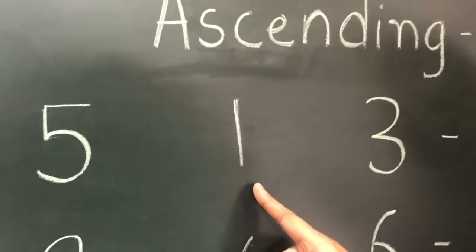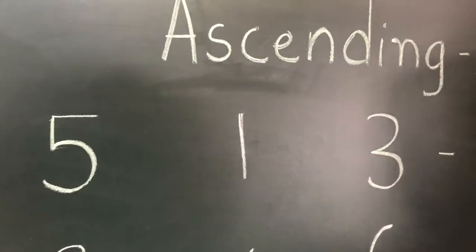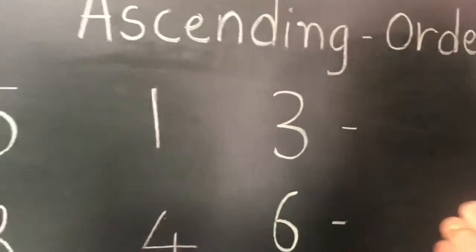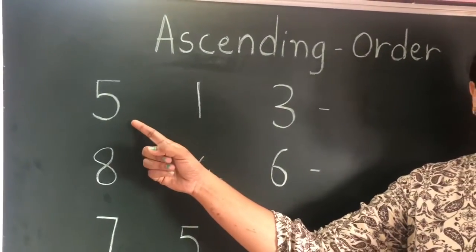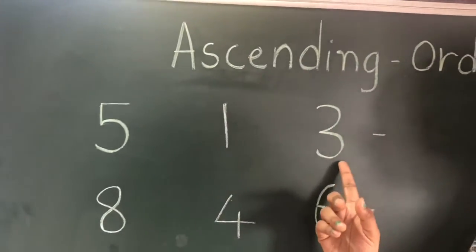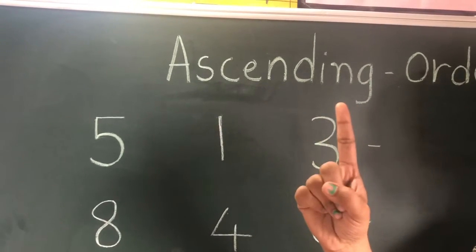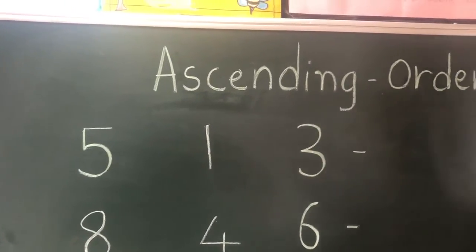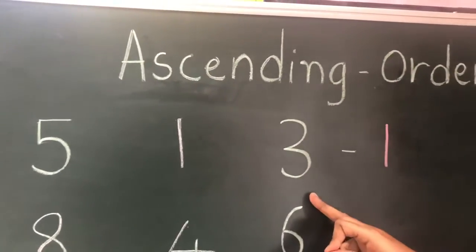We have five, one, and three. Which is the smallest number? If you have only one chocolate, that is the smallest. So one is the smallest among the three numbers. I'm going to write one first here.